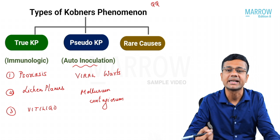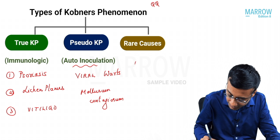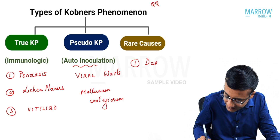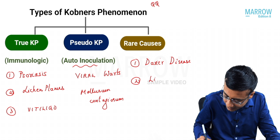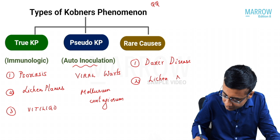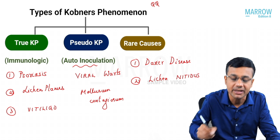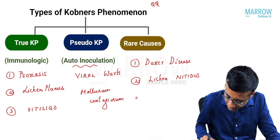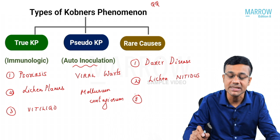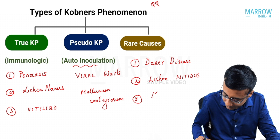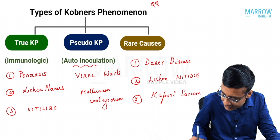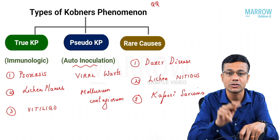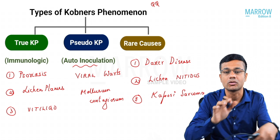Rare causes of Koebner's phenomenon include Darier disease, lichen nitidus, and Kaposi sarcoma. For exam purposes, focus mainly on true Koebner's and pseudo Koebner's.